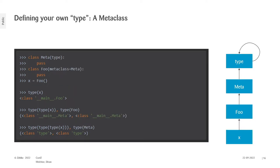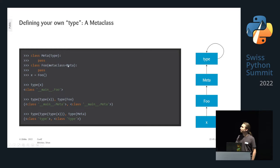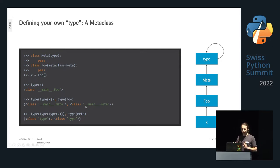Metaclasses allow you to define your own type. We define a metaclass `Meta` that inherits from `type`. We redefine class `Foo` but now set its metaclass to `Meta`. Then: `type(x)` is still `Foo`, but `type(Foo)` — the type of the type of x — is now `Meta` instead of `type`. And `type(Meta)` is then `type`. So: x is of type Foo, Foo is of type Meta, Meta is of type type.